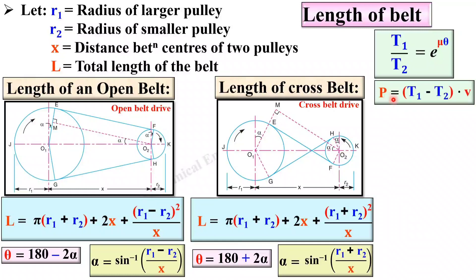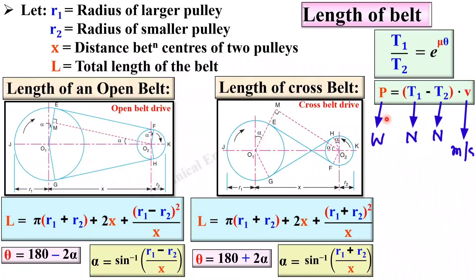Next, P = (T1 − T2) × v, where P is the power transmission capacity of the belt drive, always in watts. T1 and T2 are the tight side tension and slack side tension, both in Newton. V is the velocity of the belt, always in meters per second.